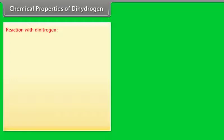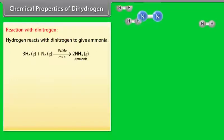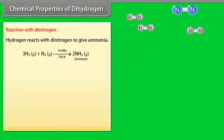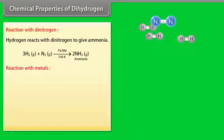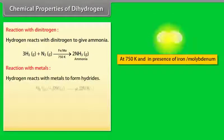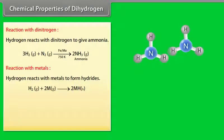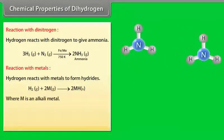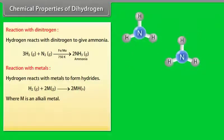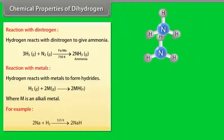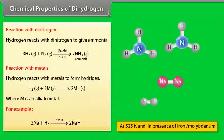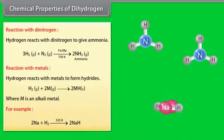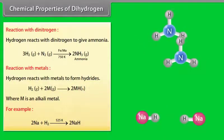Chemical properties of dihydrogen. Reaction with dinitrogen. Hydrogen reacts with dinitrogen to give ammonia. Reaction with metals. Hydrogen reacts with metals to form hydrides, where M is an alkali metal. For example, 2Na plus H2 on temperature 525 Kelvin gives 2NaH.